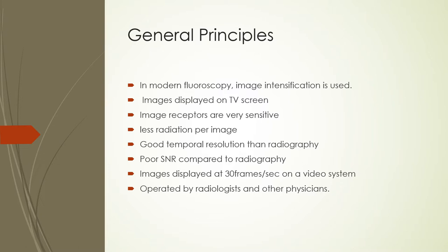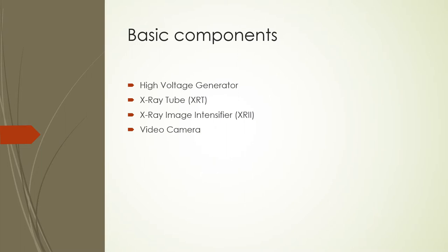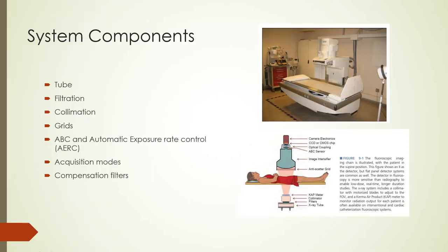In many situations, fluoroscopy is operated by the radiologist, so it is important for radiologists to know how the system operates, what factors influence patient dose, and ways to minimize exposure to patient and staff. Basic components of a fluoroscopy system include a high voltage generator or power supply, an x-ray tube, and an x-ray image receptor which also intensifies the image at the video camera. On the next slide, we shall start with the x-ray tube.